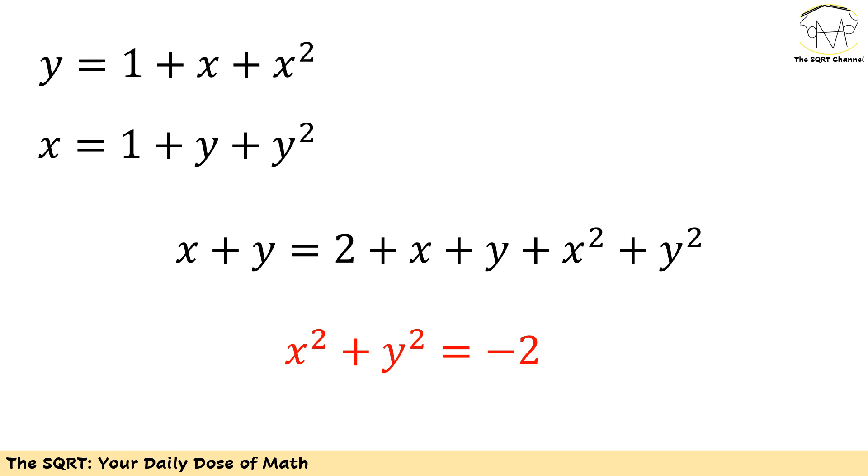Now if you take a close look you are going to see that the left hand side can be removed from the equation and then I have x squared plus y squared equals negative 2.